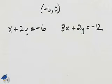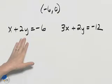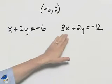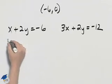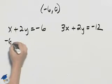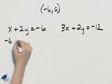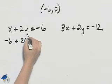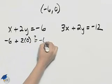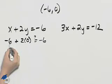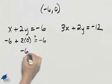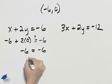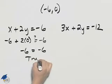We need to determine if negative six, zero satisfies the given system. I will substitute negative six for x and zero for y. In the first equation, I have negative six plus two times zero. Negative six plus zero gives negative six, so I get negative six equals negative six — a true statement.